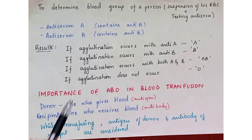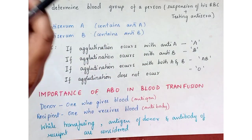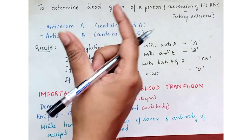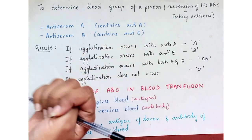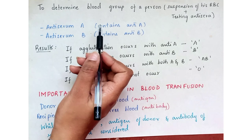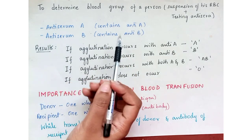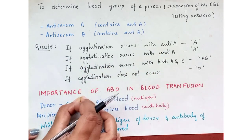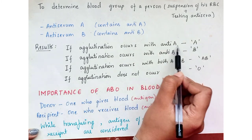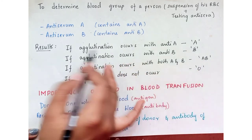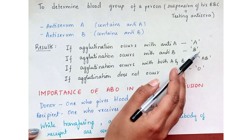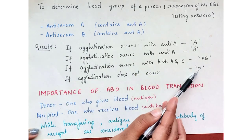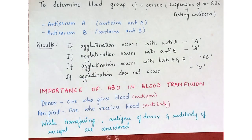To determine blood group, take RBCs from a person and add testing anti-sera — anti-serum A and anti-serum B. If agglutination occurs with anti-A, the blood group is A. If agglutination occurs with anti-B, blood group is B. If agglutination occurs with both, it is AB group. If there is no agglutination at all, it is O group.